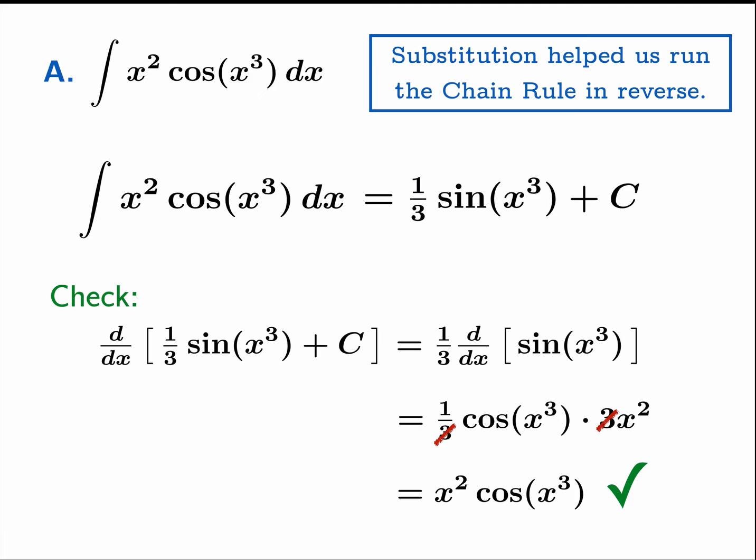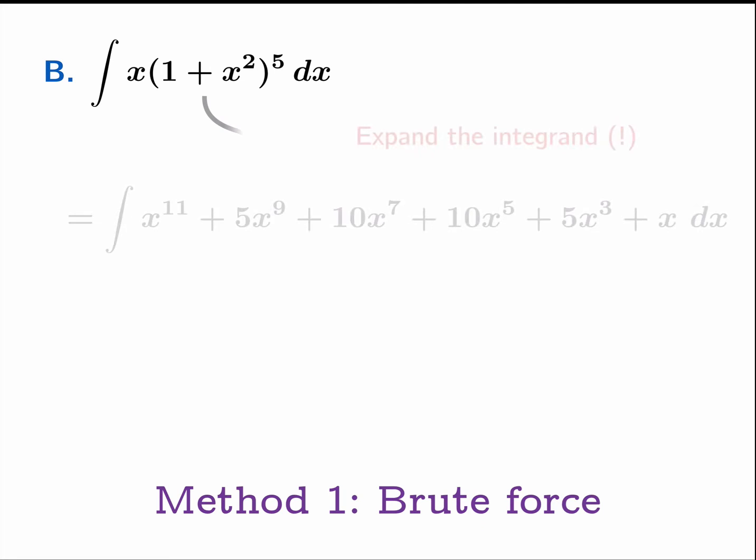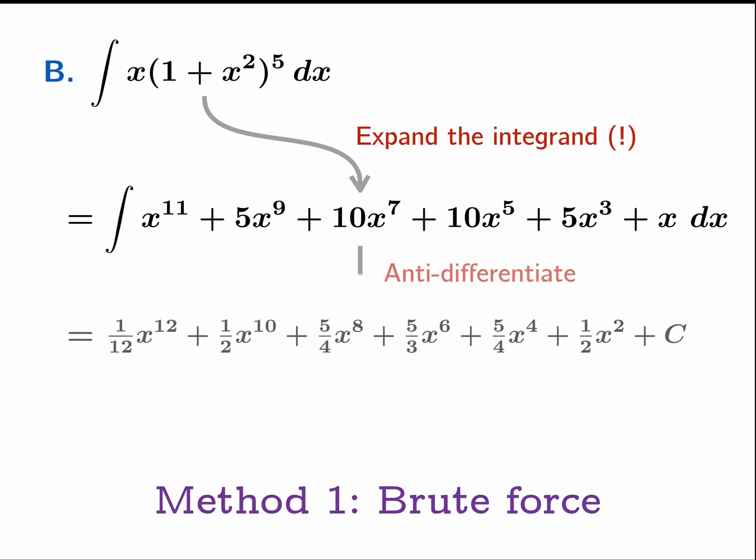So one way to think of substitution is it's a handy way of keeping the books, keeping track of what you're doing when you try to run the chain rule in reverse. So here's our second example. Now this is just a polynomial. If you want to use brute force, you can. You can expand the integrand out to this 11th degree polynomial and then anti-differentiate. That's perfectly legitimate. But let's see if we can find a little more sophisticated method.